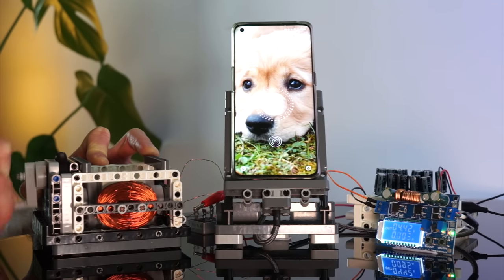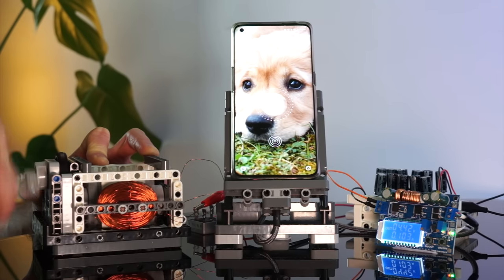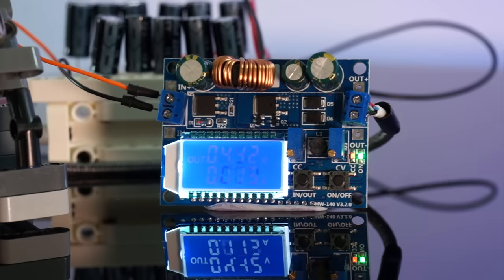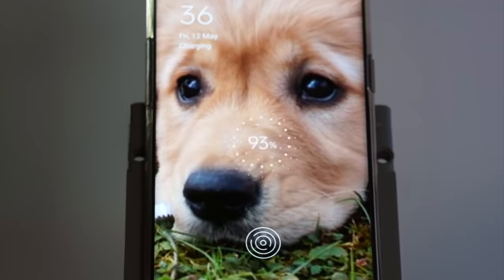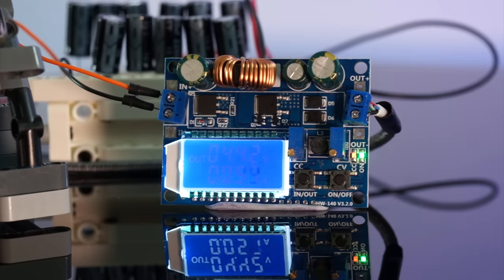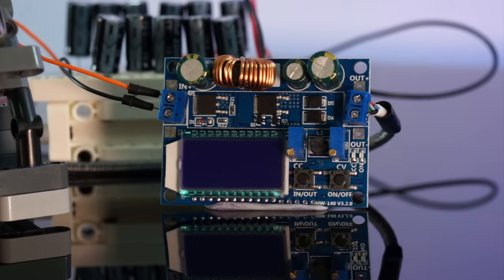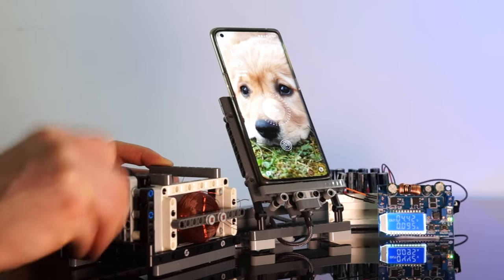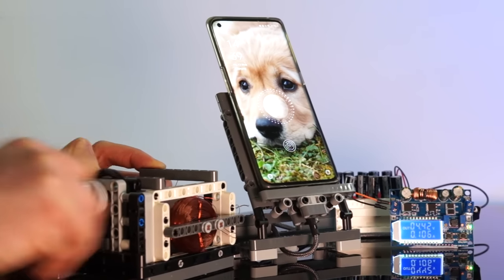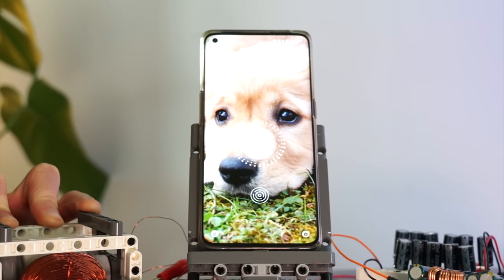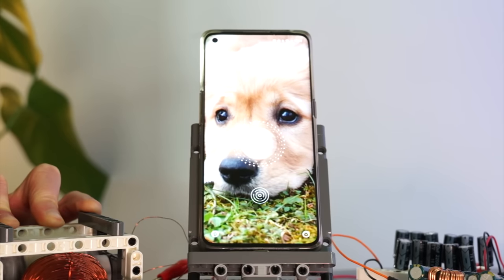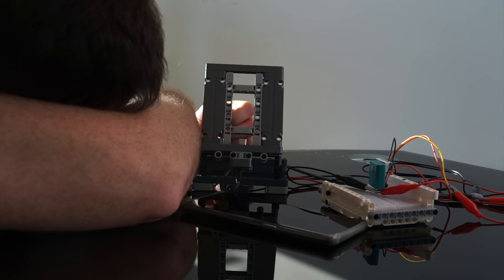So just how long will it take me to bring this thing up to charge? Well I had to limit the output current to 150 milliamps to prevent this phone guzzling everything the converter was feeding it causing it to shut down. Let's see, this phone has a 4000 milliamp hour battery so if we're charging at 150 milliamps this will take approximately 28.1 hours to fully charge.